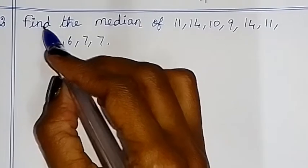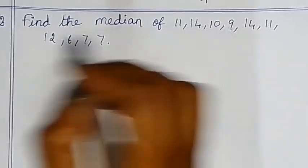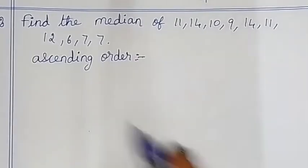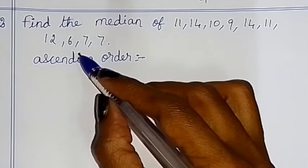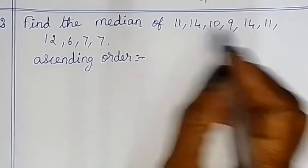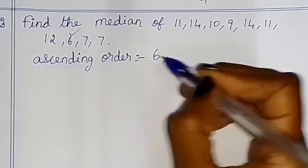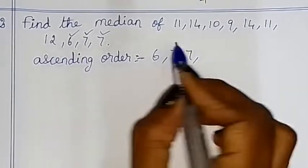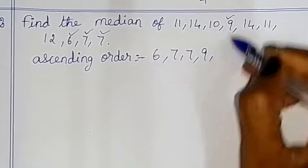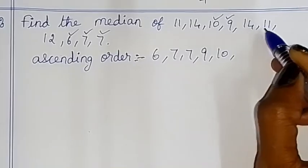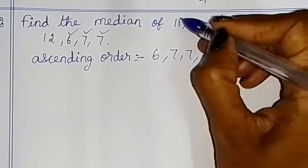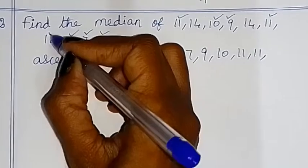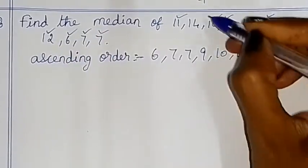Second sum: find the median of 11, 14, 10, 9, 14, 11, 13, 6, 7, 7. Again, arrange in ascending order. The smallest number is 6, then 7 appears twice, 9, 10, 11 appears twice, 12, 13, and 14 appears twice.